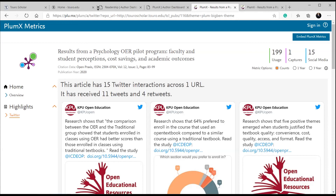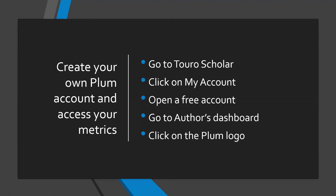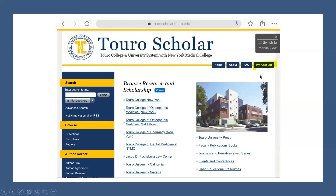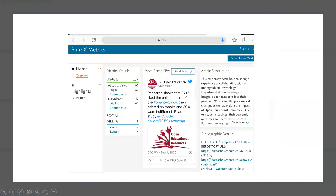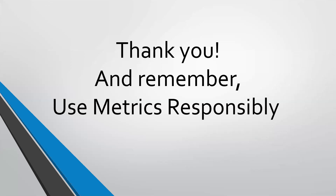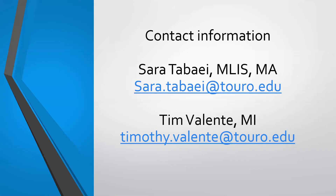So I hope this was useful. Here are the steps I just showed you: go to the library website at turolib.org, go to Toro Scholar, click on my account, open a free account, go to the author dashboard, and then click on the Plum logo on the left side of the screen. You can then go through all of the different metrics we just talked about. Remember to use metrics responsibly, as Tim mentioned. Here's our contact information — if you have any questions, please don't hesitate to contact me or Tim, and we will be more than happy to answer. Thank you.